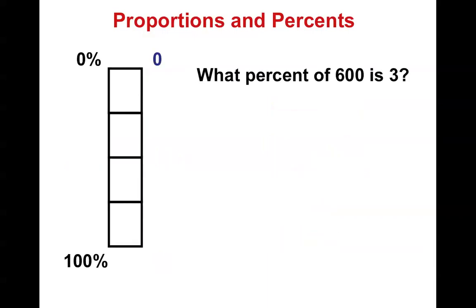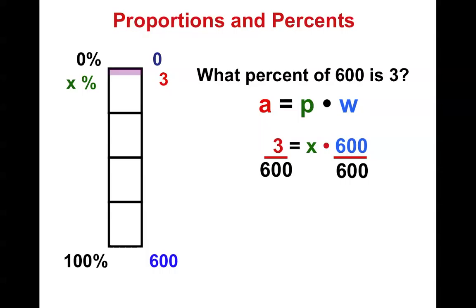You try. All right, I'm back. Think about it. There's 3, there's 600. What percentage would that be? Well, once again, we have our formula. We plug in our numbers, and I divide by 600 and divide by 600. I end up getting 0.005, which would be 0.5%.